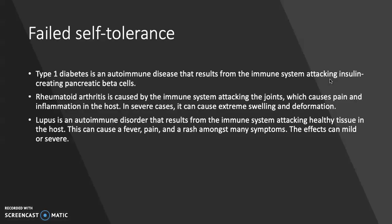Here are some examples of failed self-tolerance. Type 1 diabetes is an autoimmune disease that results from the immune system attacking insulin-creating pancreatic beta cells. Rheumatoid arthritis is caused by the immune system attacking the joints, which causes pain and inflammation, and in severe cases can cause extreme swelling and even deformation. Lupus is an autoimmune disorder that results from the immune system attacking healthy tissue in the host, and can cause fever, pain, and a rash, among many other symptoms, ranging from mild to severe.